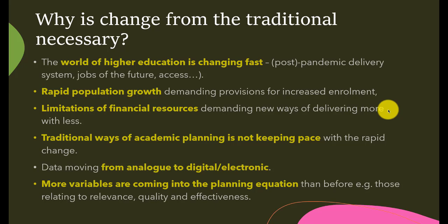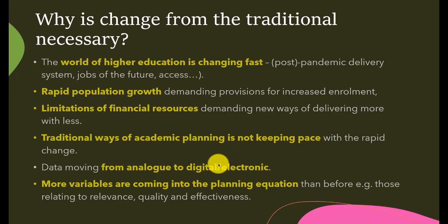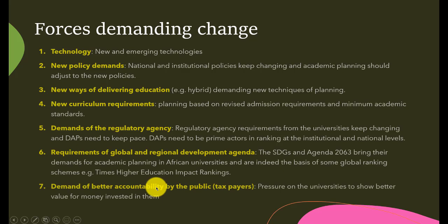Financing and funding is not unlimited, so there are limitations of financial resources which will demand new ways of delivering more with less. Traditional ways of academic planning are not keeping pace with the rapid change — moving from analog to digital. Throughout this course I never asked you to fill a form manually; it has all been digital, electronic, and online. More variables are coming into the planning equation than before, especially those relating to relevance, quality, and effectiveness.